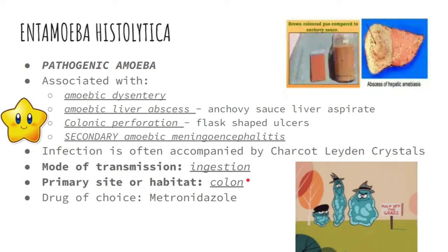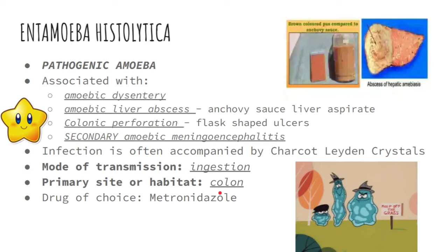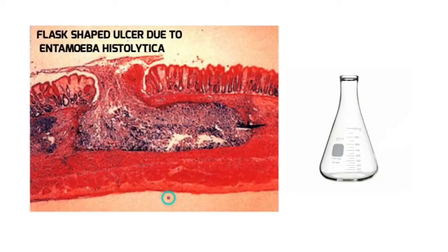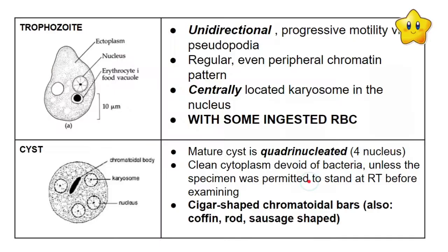Infections with this amoeba are often accompanied by Charcot-Leyden crystals. For the mode of transmission, you can get Entamoeba histolytica through ingestion of contaminated food or water. Its primary site or habitat inside the body is mainly the colon. The drug of choice is metronidazole.